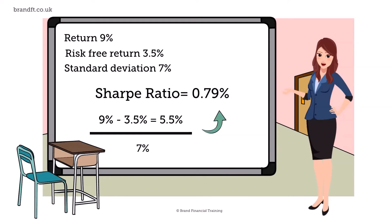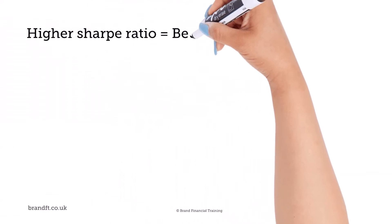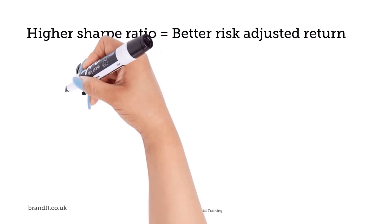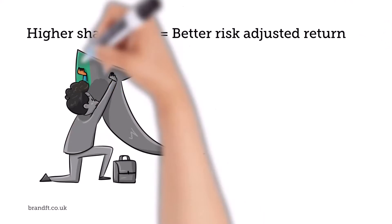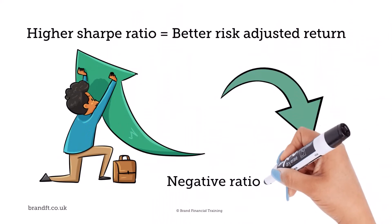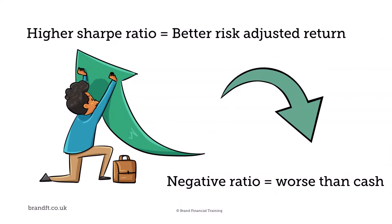This tells us that a 0.79 return was earned above the risk-free rate for each unit of risk taken. The higher the Sharpe Ratio, the better its risk-adjusted return has been. A negative Sharpe Ratio means the manager did not achieve returns as high as could be generated from cash.